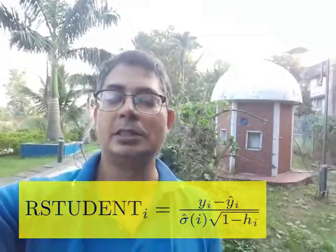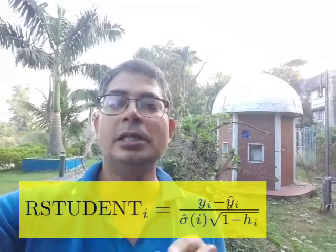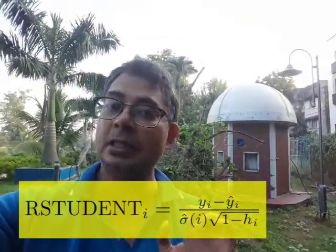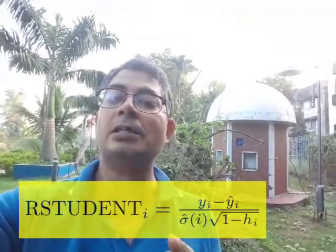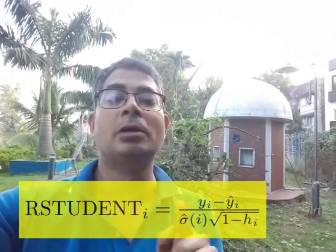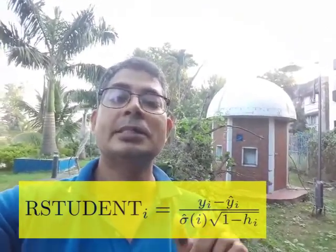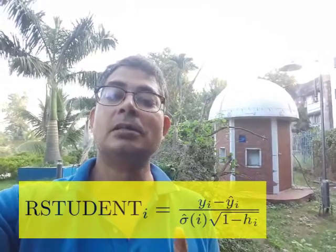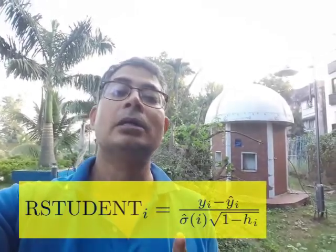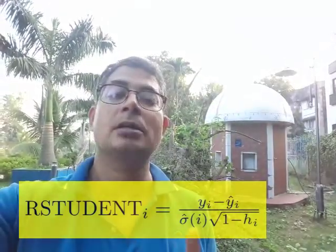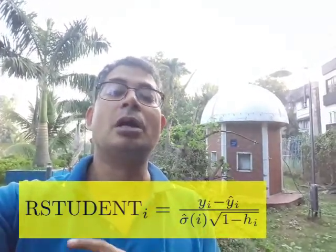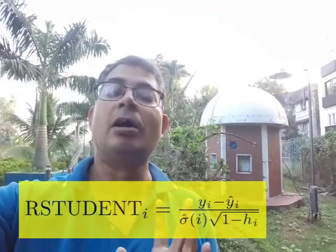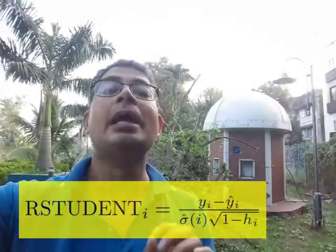r-student i is the ith studentized residual. It is defined as yi minus yi-hat — that is the usual residual for the ith case. When I divide it by its standard deviation, a little bit of algebra would convince you that the standard deviation is sigma times square root of 1 minus h_i, where h_i is the hat value. Remember to estimate sigma not by sigma-hat, but by sigma-hat(i). That is called r-student i, and it will enable us to get a better idea of the underlying unobservable epsilon i's.